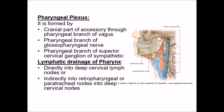The lymphatic drainage of the pharynx is directly into the deep cervical group of lymph nodes. Indirectly, it drains through the retropharyngeal or paratracheal group of lymph nodes into the deep cervical nodes.